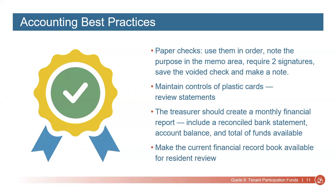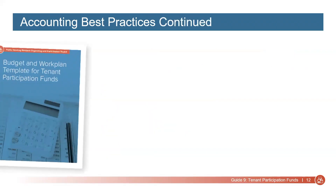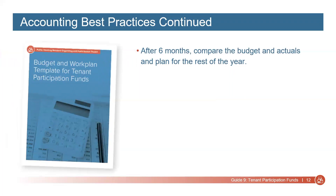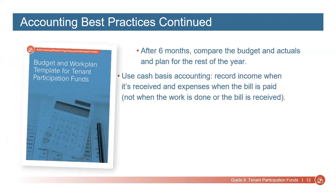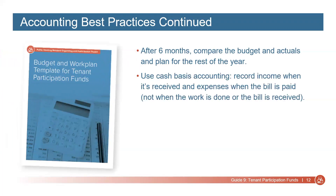The current financial record book should be available for residents to review by appointment. After six months, compare the budget to what was actually spent and plan for the rest of the year. Use cash basis accounting, which means that you record income when it's received and expenses when the bill is paid — not when the work is done or the bill is received, but when the money actually comes in or out.